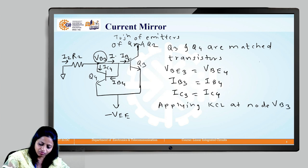This will give us the current that is entering at this node is I2, whereas the currents that are leaving this node are I and Ic4.